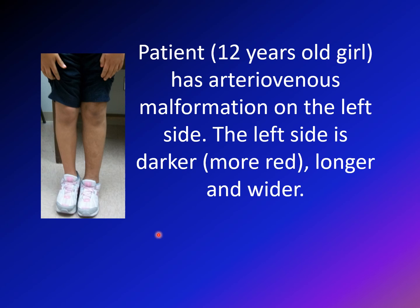Here is an example of epiphysiodesis. This child has limb-length discrepancy because of a vascular malformation — an arteriovenous malformation on the left side. You need to always exclude arteriovenous malformations because they cause an increase in the size of the affected limb. You can see the difference in color: one side is darker, and it is also longer and wider. The difference in height and width here is not due to hemihypertrophy but due to the vascular malformation.